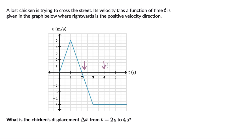In this case we need to figure out displacement between 2 and 4 seconds. So all we really need to do is find out the area under the vt curve in this time interval.